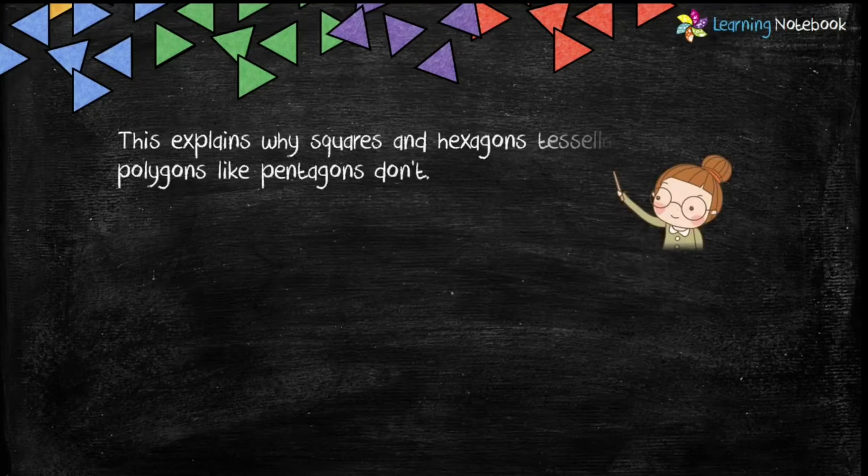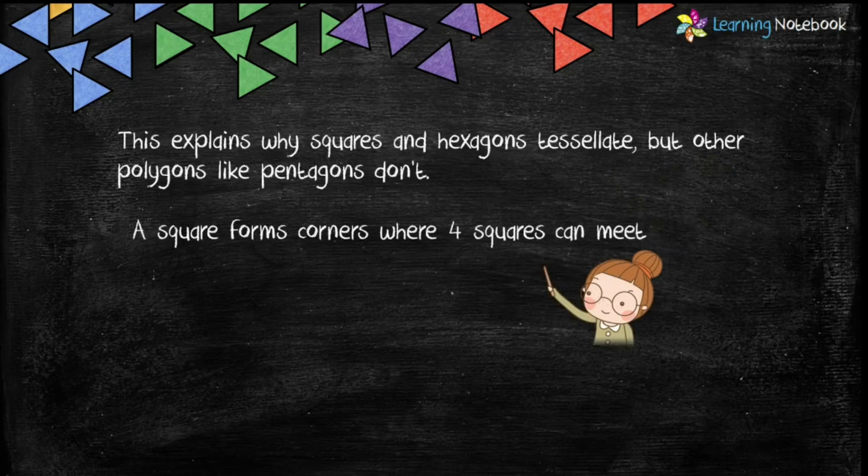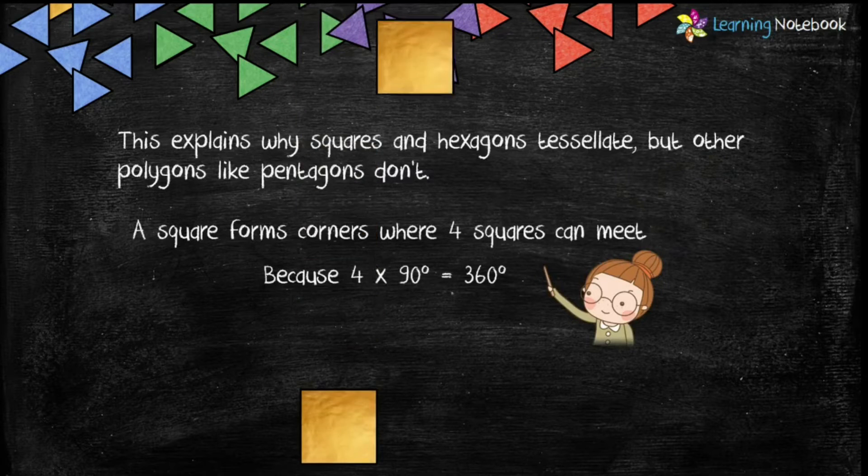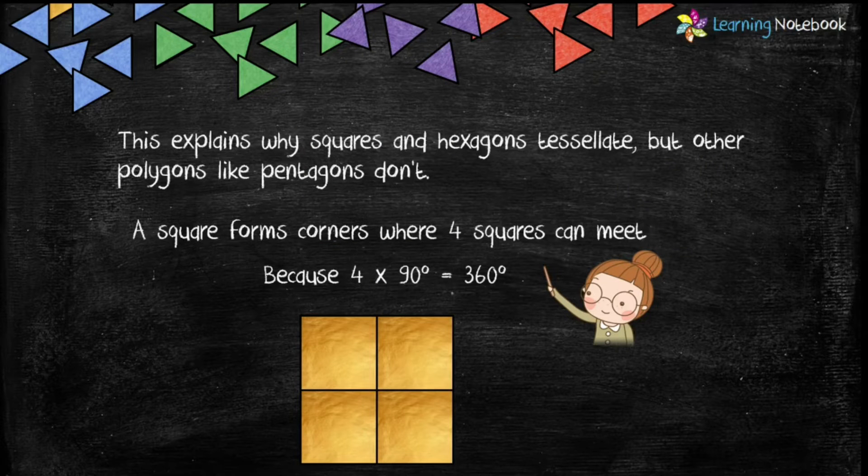Students, this also explains why squares and hexagons tessellate but other polygons like pentagons do not. A square forms corners where four squares can meet because 4 into 90 degrees equals to 360 degrees.